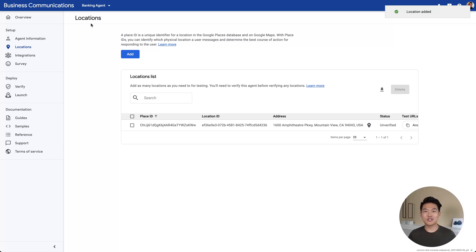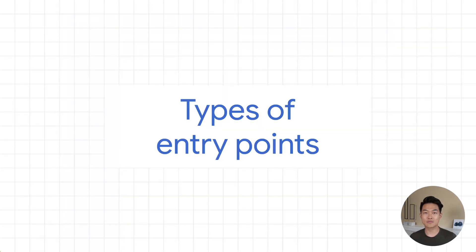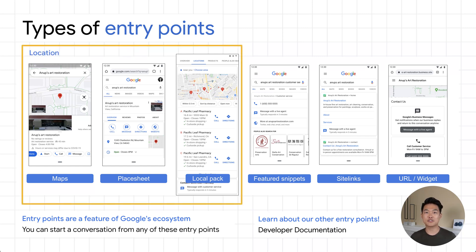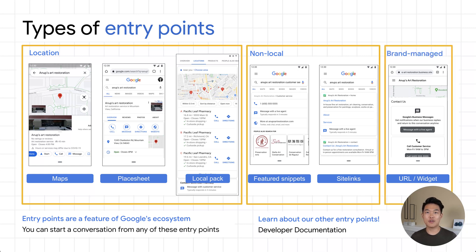With these entities created, you can configure where they will be launched. There are plenty of different entry points and we are constantly adding new ones. We have three primary groups of entry points which you can launch agents to: location-based entry points, which are tied to physical places in the real world; non-local entry points, which are tied to customer support or other search intent; and brand-managed entry points, which are those you can place anywhere — in a QR code, embedded in an app, or on a website.